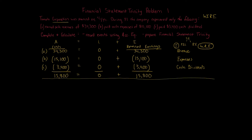Now we go through the financial statement trinity. We'll focus on the income statement, the balance sheet, and the statement of changes to stockholders' equity since this is a corporation. These three statements are the trinity. The statement of cash flows is outside the trinity and is a separate statement.